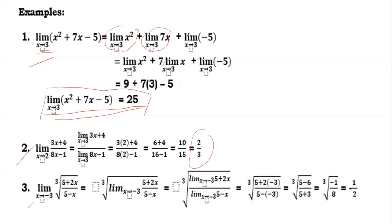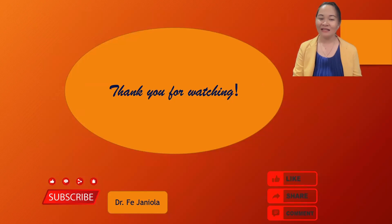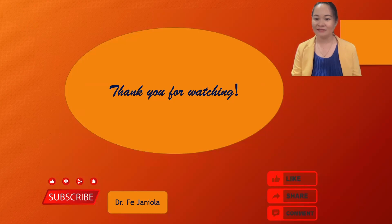Example three: the limit of the cube root of (5 + 2x) over (5 − x) as x approaches negative 3. Substitute negative 3: 5 plus 2 times negative 3 over 5 minus negative 3, giving 5 minus 6 over 5 plus 3, which is negative 1 over 8. The cube root of negative 1/8 is negative 1/2. That is the final answer, applying the radical theorem. Please watch my other video on infinite limits — comment, like, and subscribe.